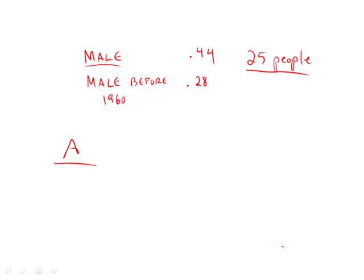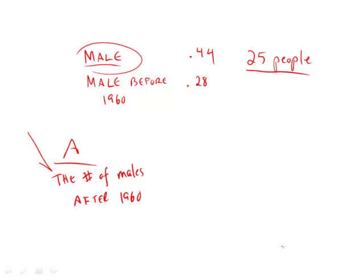What we want to know here is if we select at random from this 25, the number of males, or rather simply the number of males who are born after 1960. So this is the same as finding the total number of males, and from that number, subtracting the total number of males born before 1960, and that will give you the number of males born after 1960.